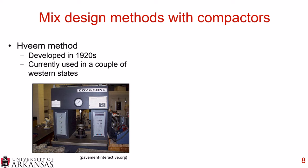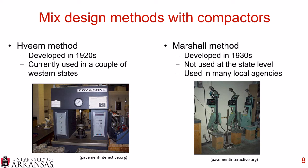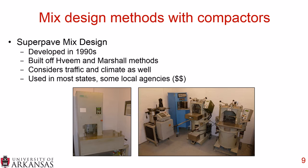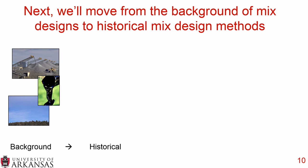Here is a brief overview of each mix design method with pictures of the compactors. The Hveem method was developed in 1920 and is currently used in a couple of western states. The Marshall method was developed in the 1930s; it's not used anymore at any state level in the United States, but it is used in many local agencies. The Superpave mix design was developed in the 1990s, built off the Hveem and Marshall methods, and considers traffic and climate as well. It's used in most states, though the equipment investment is quite high.